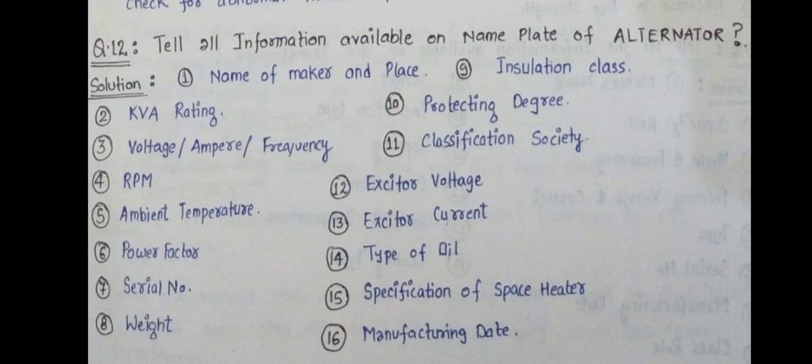These are the information available. Almost the same as the transformer, but some are extra in the alternator. The extras we can say are power factor, voltage, ampere, frequency, RPM, exciter voltage, exciter current, and type of oil. These are some of the additions we can see in an alternator.